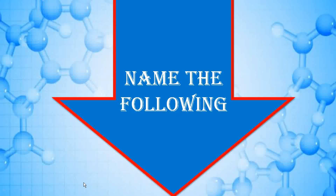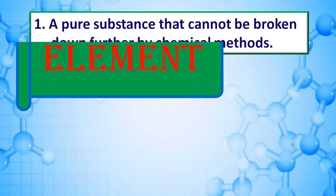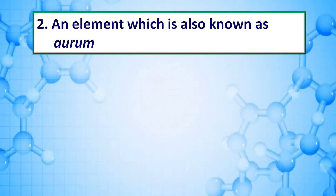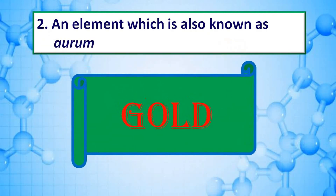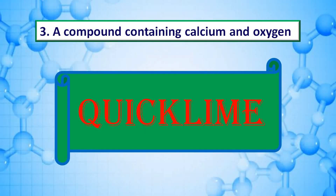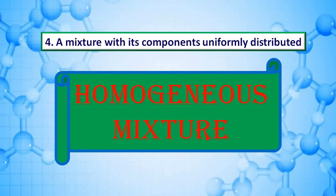Name the following: A pure substance that cannot be broken down further by chemical methods — answer is element. An element also known as aurum — answer is gold. A compound containing calcium and oxygen — answer is quicklime.